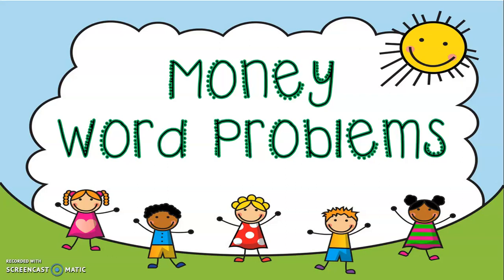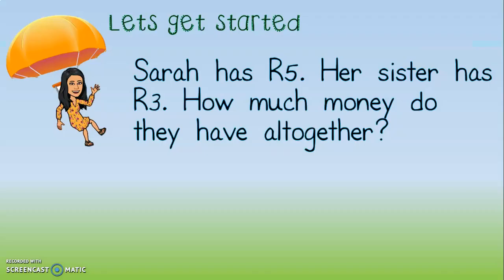Let's do our first example. Sarah has 5 rand. Her sister has 3 rand. How much money do they have altogether? There are 3 things that we need to remember. The first thing is to circle the numbers that will make our sum. What are the 2 numbers that we need to circle? 5 rand and 3 rand.